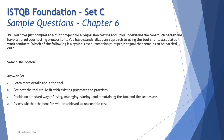Question 39 says: You have just completed a pilot project for a regression testing tool. You now understand the tool much better and have tailored your testing process towards it. You have standardized an approach to using the tool and its associated work products. Which of the following is a typical test automation pilot project goal that remains to be carried out? Before looking at the options, recall what a pilot project is and what its objectives are.